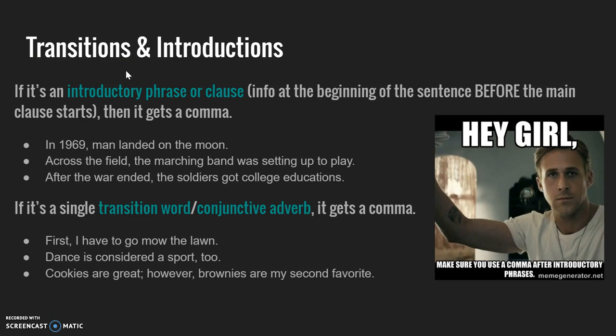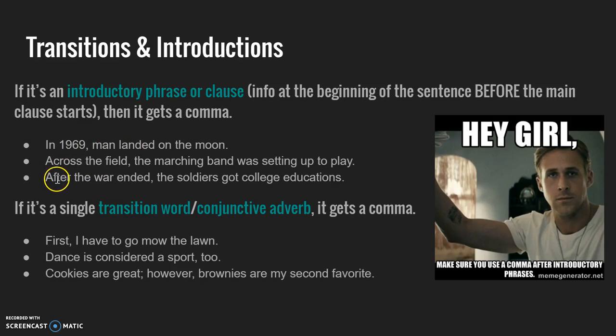Transitions and different types of introductions also get commas. If you start a sentence with an introductory phrase or an introductory clause — like a dependent clause — it gets a comma. For example: 'In 1969, man landed on the moon.' 'Across the field, the marching band was setting up to play.' 'After the war ended, the soldiers got college educations.' The first two are just introductory phrases with no verb. But 'after the war ended' is a dependent clause because 'after' is a subordinating conjunction, and 'the war ended' has a subject and predicate — so it's dependent, and it still gets a comma because it's an introductory element.